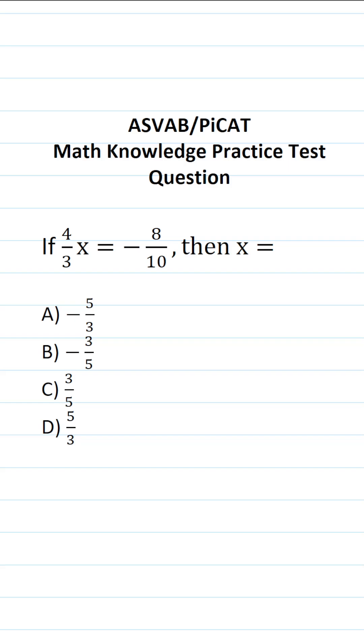This math knowledge practice test question for the ASVAB and PiCAT says, if four thirds x equals negative eight over ten, then x equals.